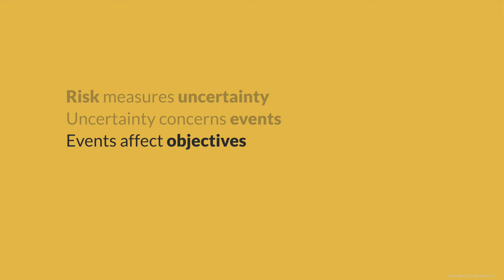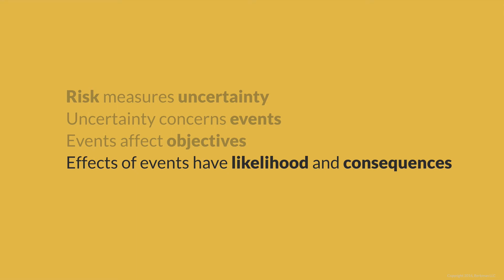Effects of events have likelihood and consequences. To refine our analysis of risk events, we break them down into their likelihood and consequences. Events themselves can have likelihood and consequences, and many events generate multiple effects, each of which has its own likelihood and consequences. For example, if we ship goods by sea, the risk event is that the ship encounters a large storm during transit. Several effects of that storm need analysis: the effect of the ship taking on water, the effect of delay in arrival, and the effect of damage to the goods. Each of these effects has its own likelihood and consequences. Through risk analysis, we can measure those risks and then manage them.